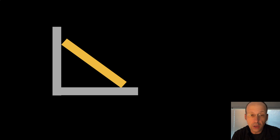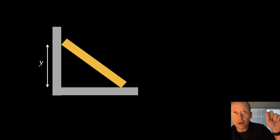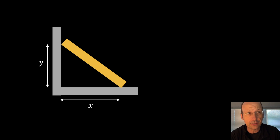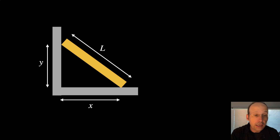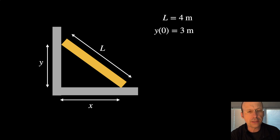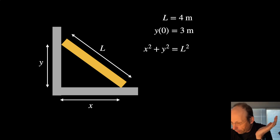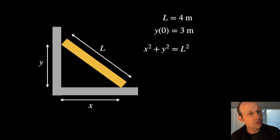Here's our ladder — I just drew a picture. We need to start labeling everything. We're going to call the top part of the ladder Y, measured from the origin at the corner. Then we have the position from the wall, which we'll call X. The length of the ladder is L. You can see we have a right triangle. L is 4, Y starts at 3. Assuming a vertical wall and horizontal floor, X squared plus Y squared equals L squared.